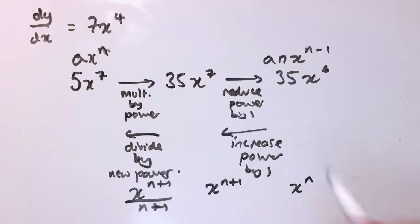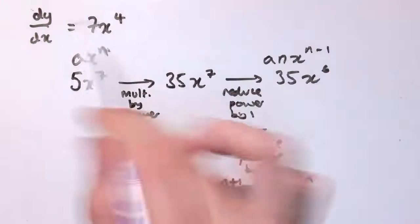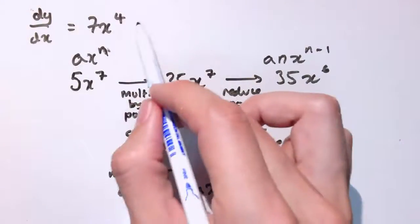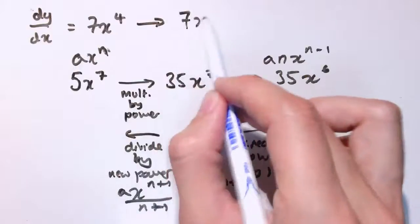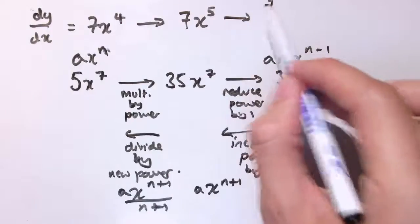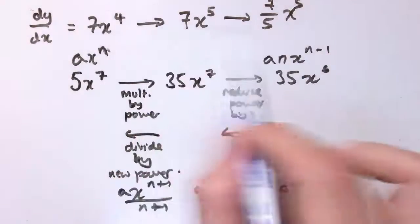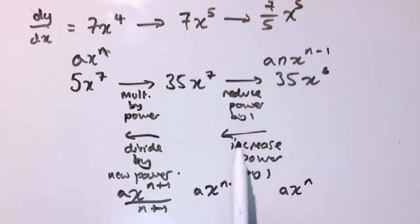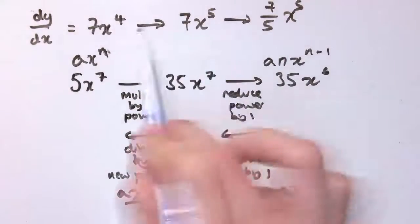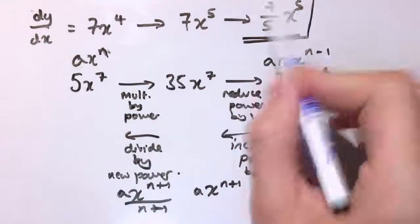We've had an a in front of it, of course, that doesn't make any difference, we can have the a everywhere just a constant. So here, I'm going to go back and I'm going to increase the power by 1, and that gives me 7x⁵, and I need to divide by the new power, and that gives me then 7/5 x⁵.